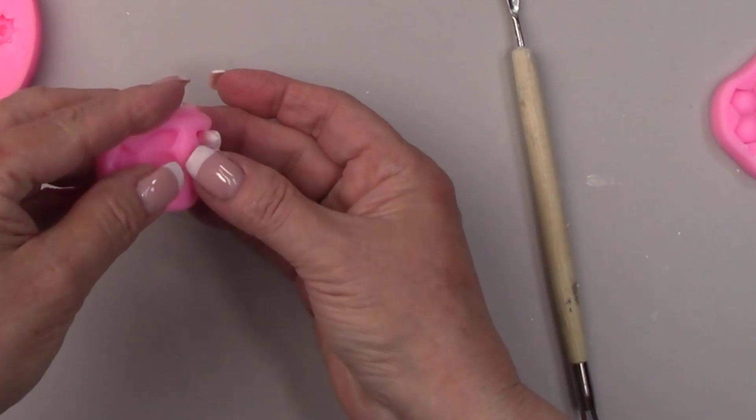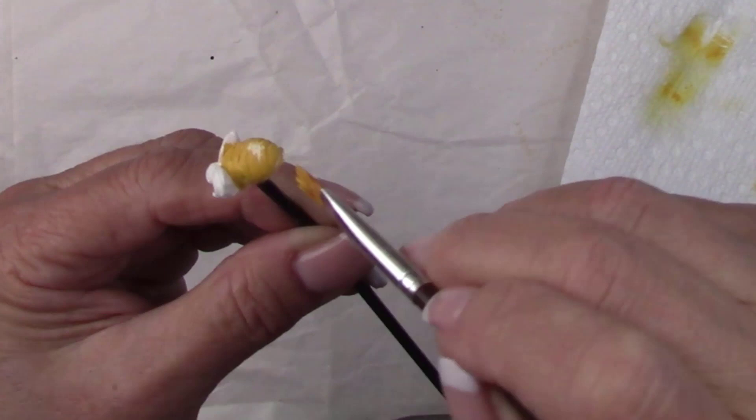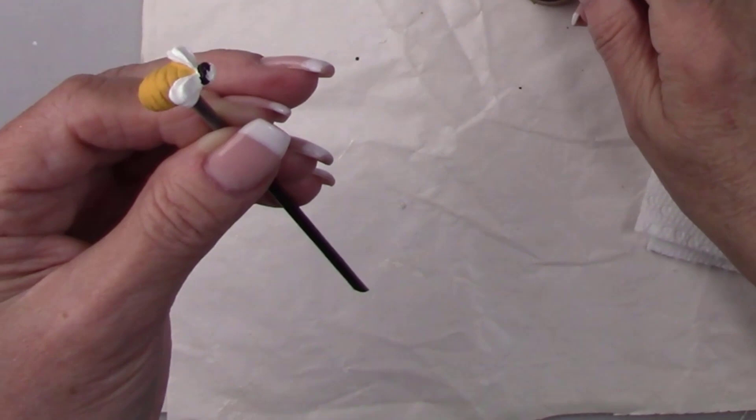After the clay dried, I painted everything, then gave it all a coat of brush-on varnish before antiquing. If you want to antique something, it will need to be sealed first so it will wipe off where you need it to be removed.